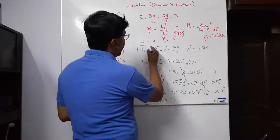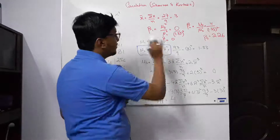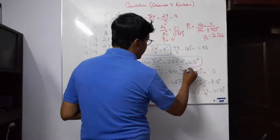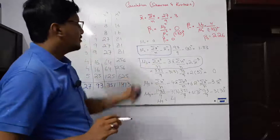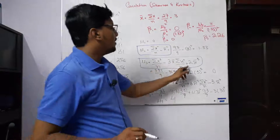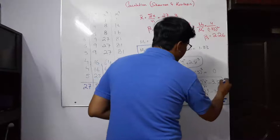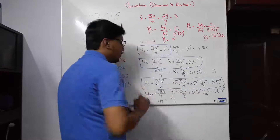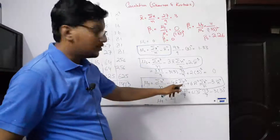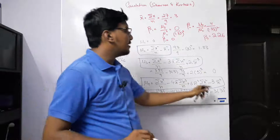The second moment formula is: second moment equals summation of x² over n minus x-bar squared. The formula for moment 3 was also derived in lecture 17: summation x³ over n, minus 3 x-bar times summation x² over n, plus 2 x-bar cubed. Similarly, the formula of moment 4 is: summation x⁴ over n, minus 4 x-bar times summation x³ over n, plus 6 x-bar squared times summation x² over n, minus 3 x-bar to the power 4.